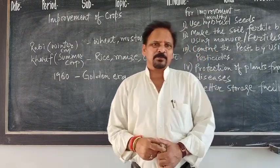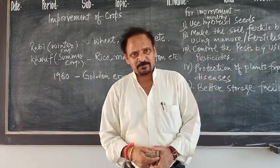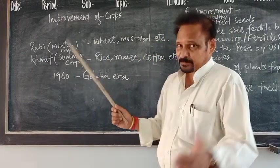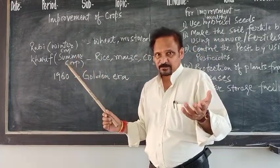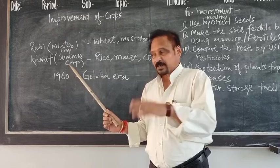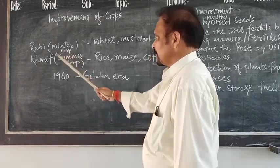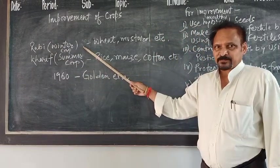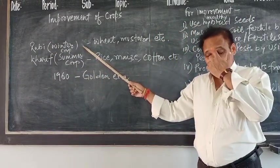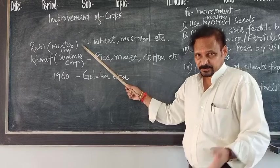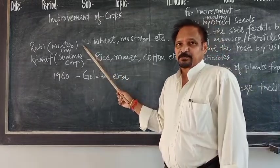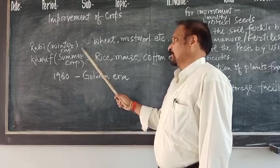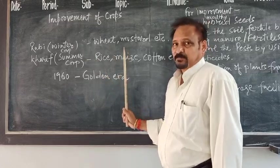The first type is the Rabi crop, whose harvesting time is going on right now. Rabi crop is also known as the winter crop. Their harvesting time is in the months of March and April. Examples of Rabi crop are wheat, mustard, and similar crops.